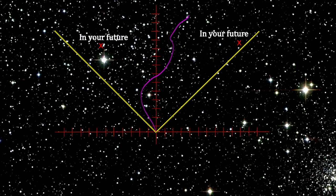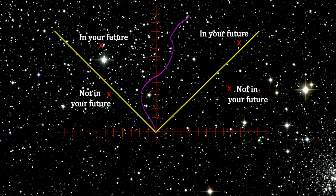The speed of light lines are the divider between events that are in your future, if it's your light cone, and events that are not. By in your future, I mean that you can be connected to them physically in some way.